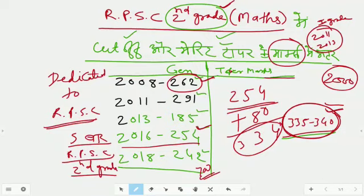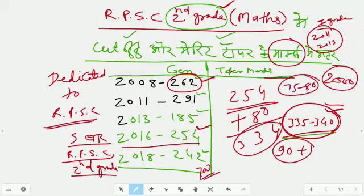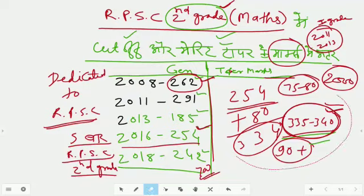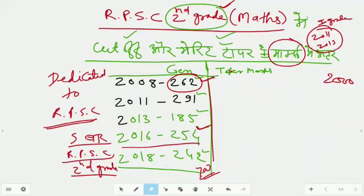If the paper is tough, it will be around 80 marks difference. If the paper is easier, the difference of marks can be 90 marks. The difficulty level affects the difference between cut-off and topper marks.